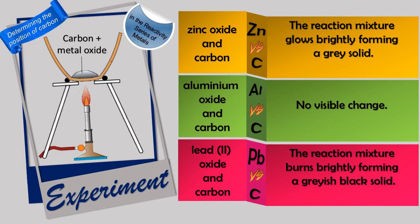This is the experiment to determine the position of carbon in the reactivity series of metals. The mixture of carbon powder and zinc oxide are mixed uniformly. The mixture is heated strongly for a few seconds, then the Bunsen flame is removed and the mixture is examined to identify whether it will continue to glow or not. All these steps are repeated using aluminum oxide and lead oxide respectively. The reaction mixture between zinc oxide and carbon glows brightly, forming a grey solid. Carbon is more reactive than zinc.